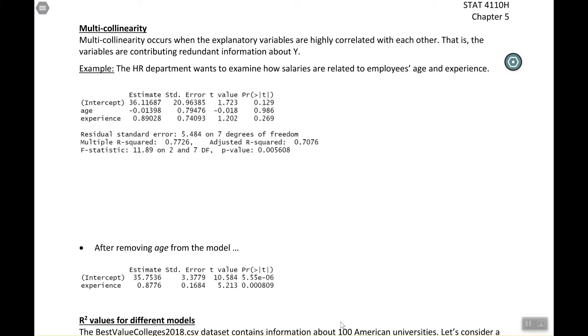Sometimes some strange things can happen in multiple regression. This is one of those cases. This is an example about an HR department that wants to see how salaries are related to employees' age and experience. So you can see the R output there, and you can read it sort of the same way you did in the previous chapter.